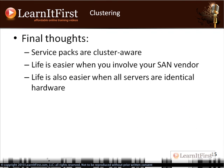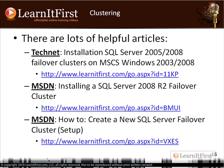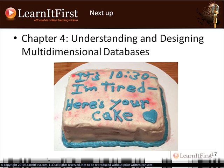A couple of final things: service packs are cluster aware — they will patch the entire cluster and all nodes. Get with your SAN vendor; they'll have suggestions for where to put the quorum disks. Generally, try to make everything use identical hardware — it just makes it easy. There are some great articles linked here, and the top one is a fantastic walkthrough of installing SQL Server clusters. Just note that some 2005 material is similar yet different. Open the PDF and you'll have those links. That's it for Chapter 3.